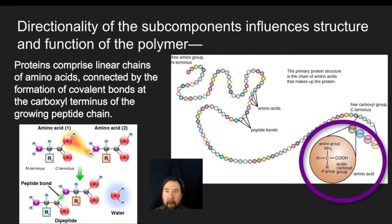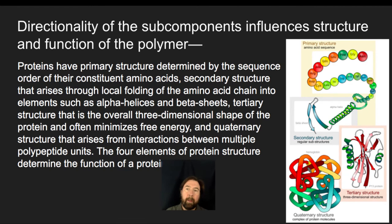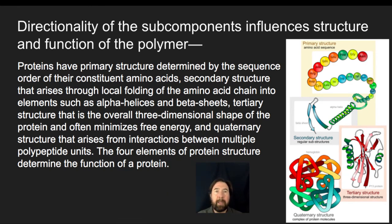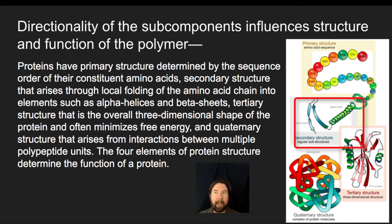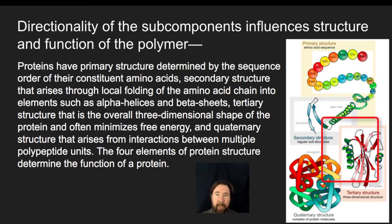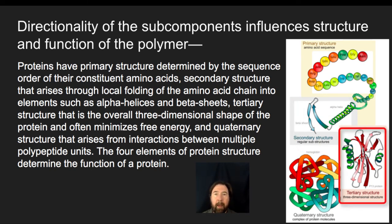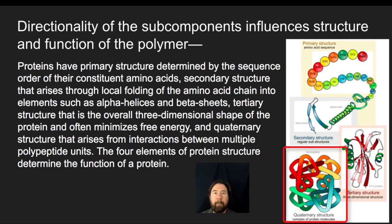We're going to keep adding on in a set direction, so the C-terminus end is the one embedded within the ribosome, where new amino acids are added. Proteins have a primary structure — the sequence and order of their constituent amino acids. The secondary structure is how the backbones of those amino acids interact to form alpha helices or beta sheets. The tertiary structure involves disulfide bridges and acid-base interactions between the R groups. And the quaternary structure brings multiple polypeptide units together.